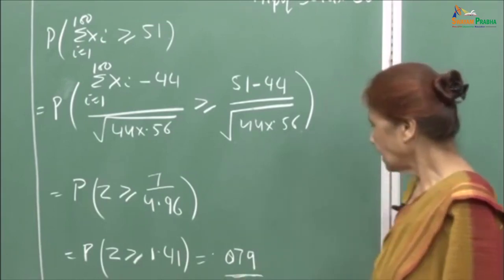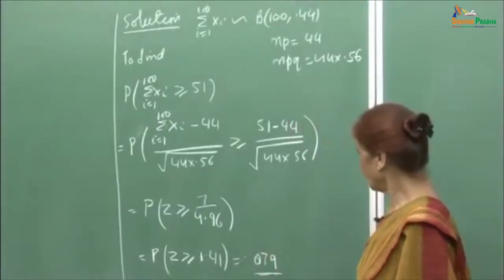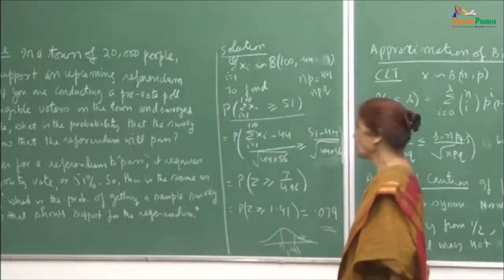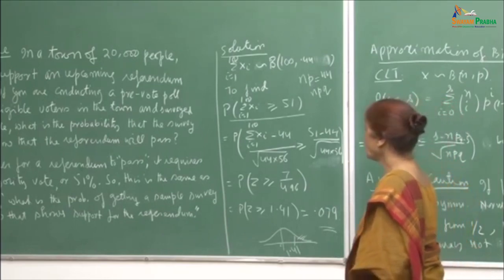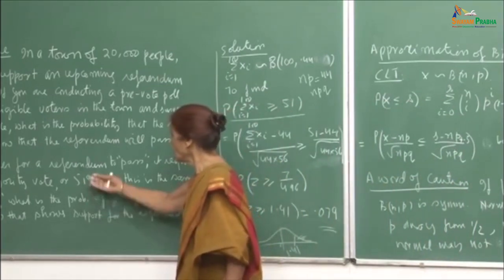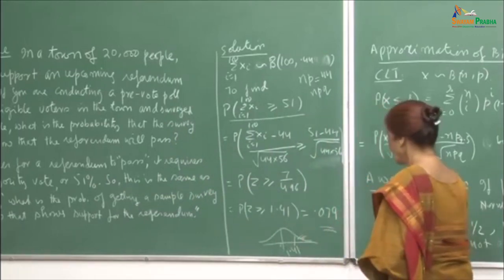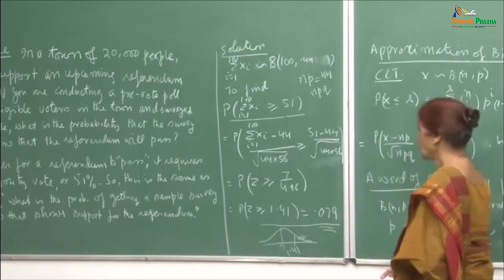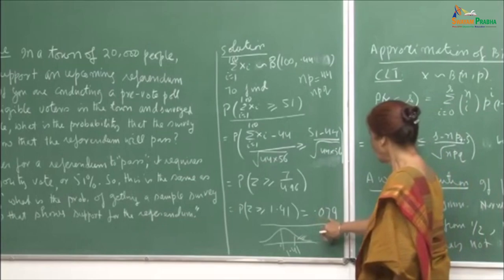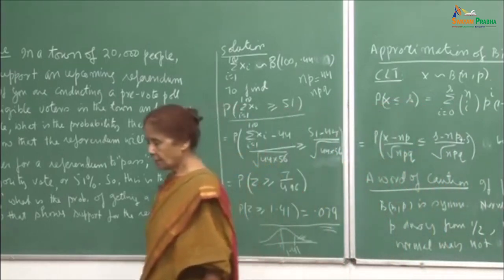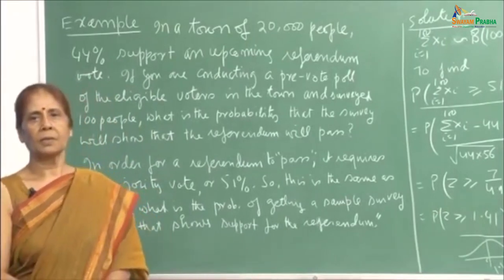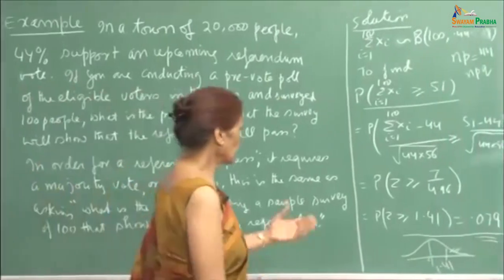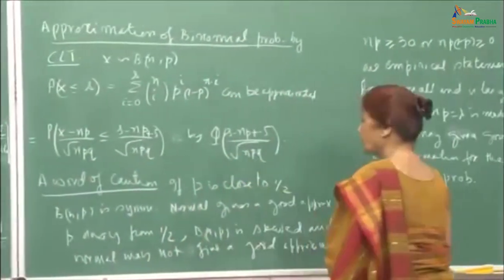This is a very small probability, and hence the chance of the referendum passing is very slim. The town has 20,000 people and you are only surveying 100. When you know that 44 percent support the referendum, the probability that 51 percent or more support it in the sample is small — 0.079 — and that is reflected here. Through the central limit theorem, you have computed the required approximate probability.